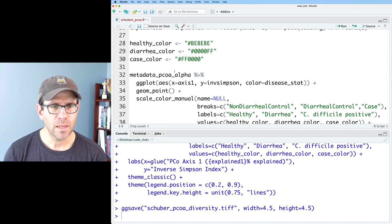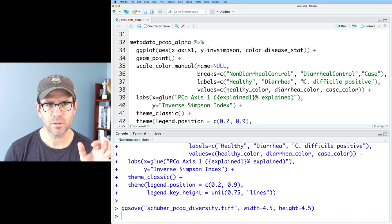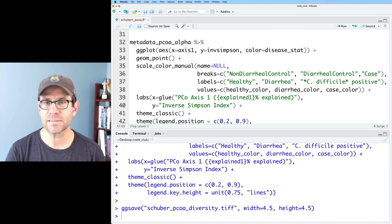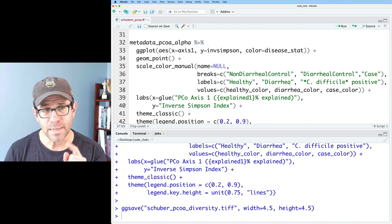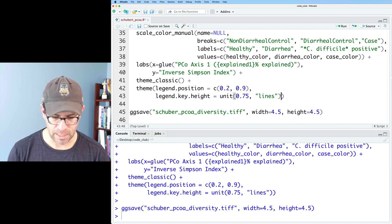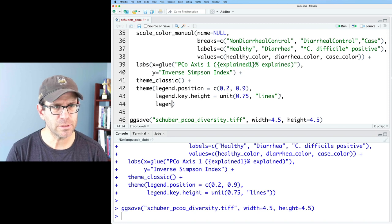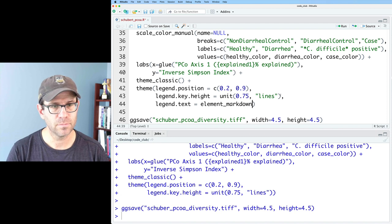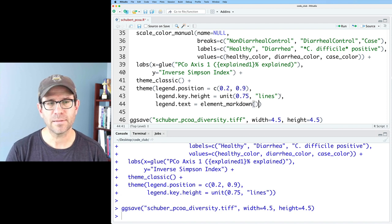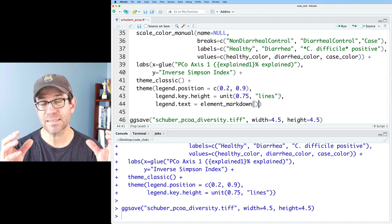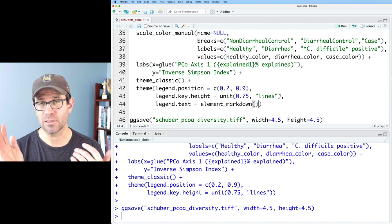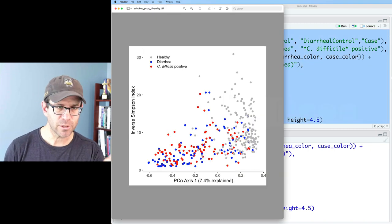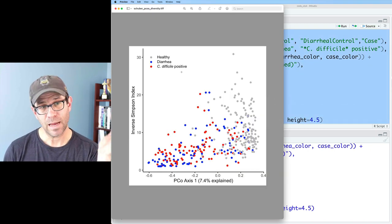So how do we do that? Well, if we come back here to our label, C difficile positive, we can use markdown and the markdown for italics is a single star. But to get that to work, we need to then come down and do legend text equals element markdown. And so that then will make the text in the legend markdown type. And so if it sees markdown like the star, it'll make it italicized. And sure enough, we now have C diff positive italicized.